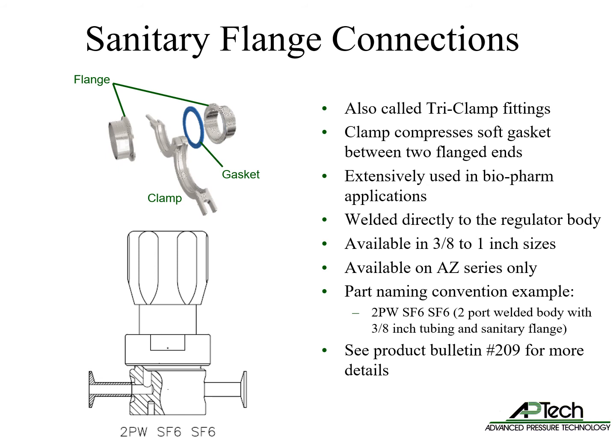Sanitary flanges are often called tri-clamp fittings. This connection clamps a soft gasket between two flanged ends to seal, and is used extensively in biopharm applications. The sanitary fitting is welded directly on the AZ body in 3/8 to 1 inch sizes. An example of a part configured with sanitary flanges is 2PW-SF6-SF6, meaning a two-port welded body with 3/8 inch tubing and sanitary flanges. For more information, see product bulletin number 209 at APTEC's website.